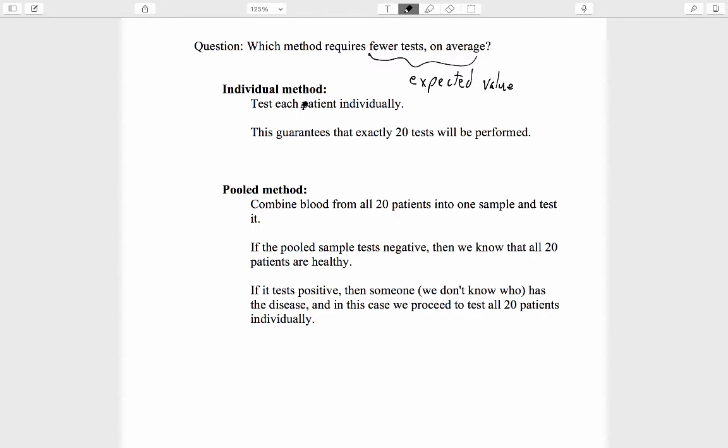For the individual method, we don't need to do any computing. The expected number of tests, the average number of tests, is exactly 20, because every time you use the pooled method on 20 people, you will have to perform 20 tests. So for the individual method, the average number of tests to be performed equals 20.